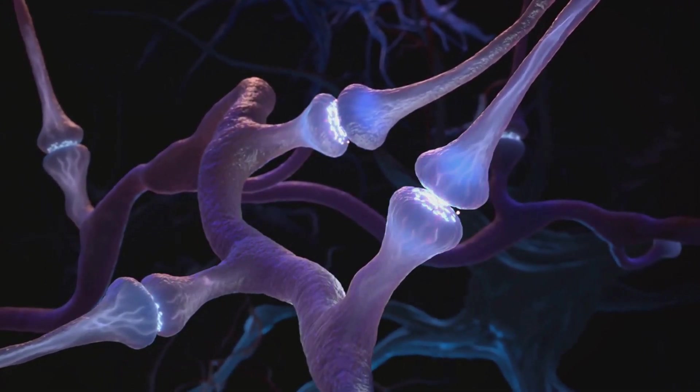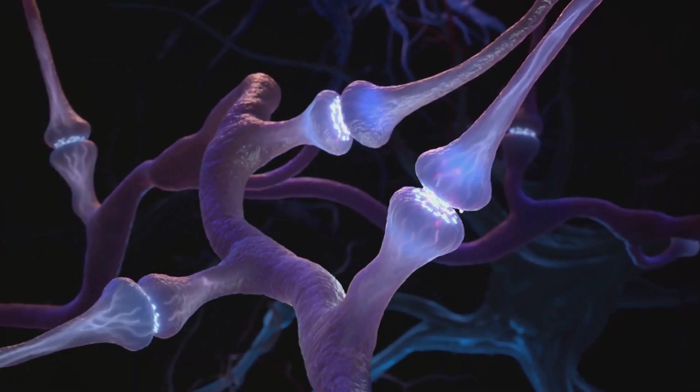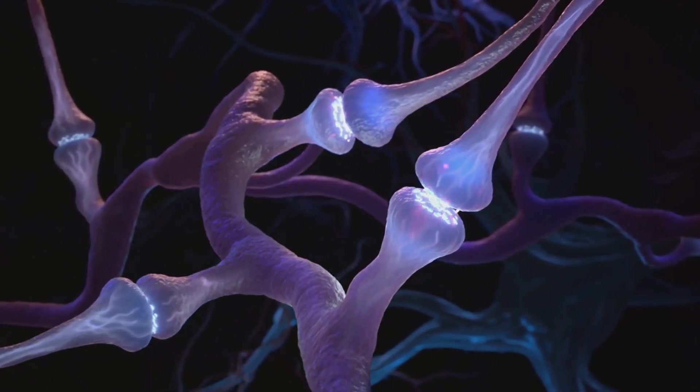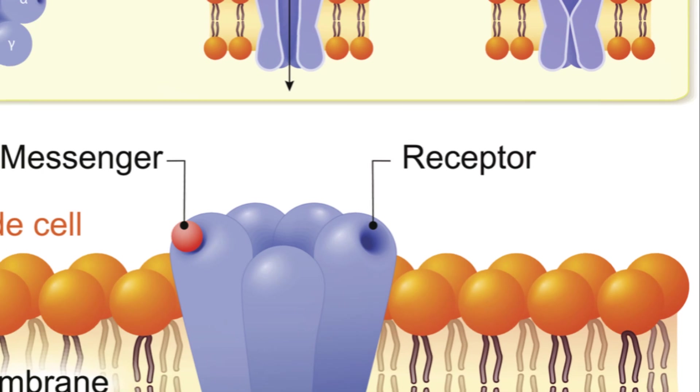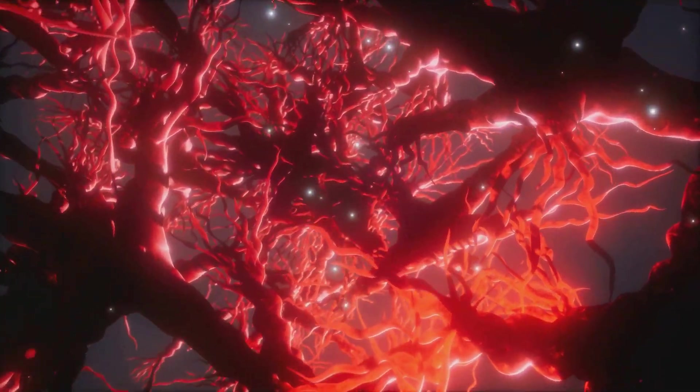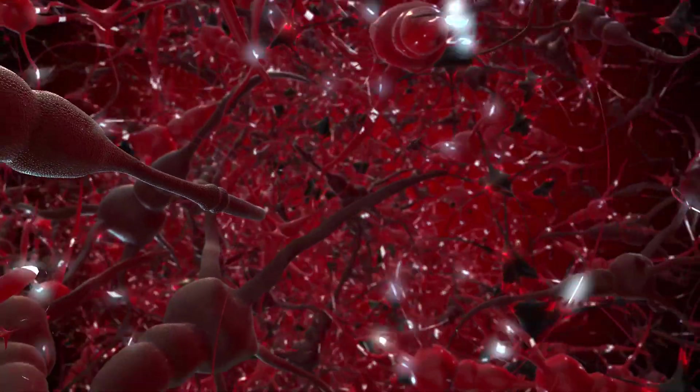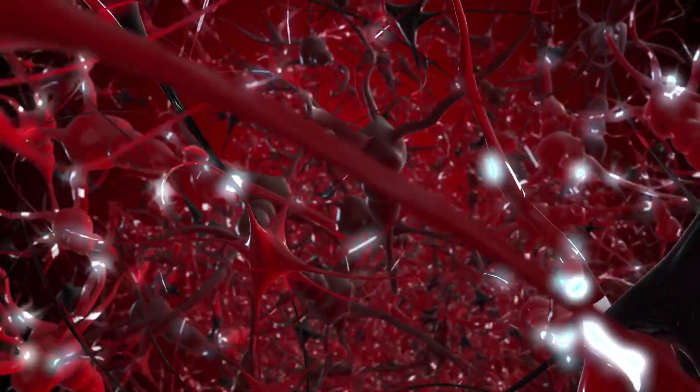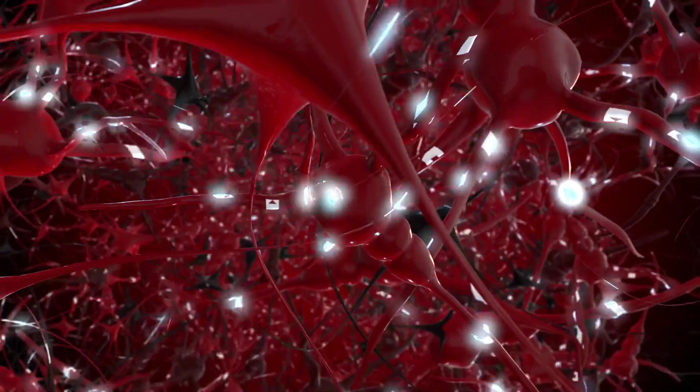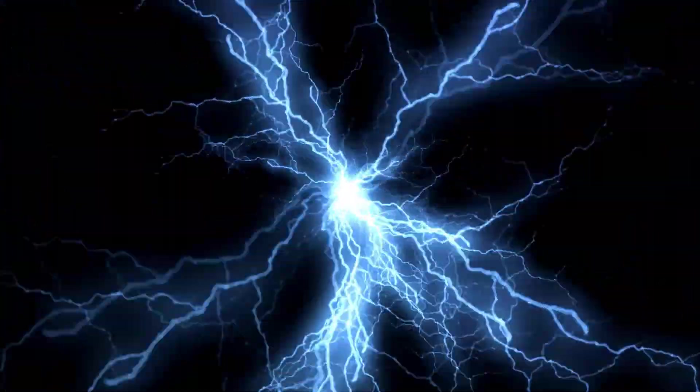Electricity in our bodies is created through the movement of ions, which are atoms or molecules that have either lost or gained extra electrons. These ions move in and out of our cells via special pathways in the cell membrane known as ion channels. Now the concentrations of these ions are not the same inside and outside the cell, thanks to the teamwork of ion channels and ion pumps.